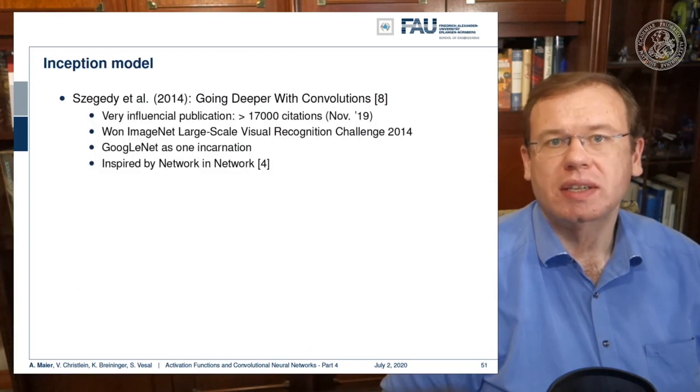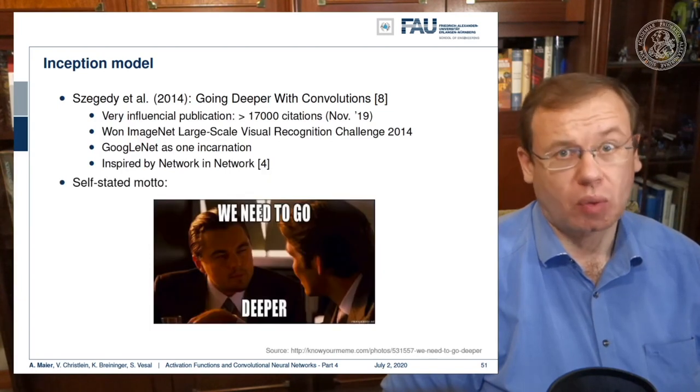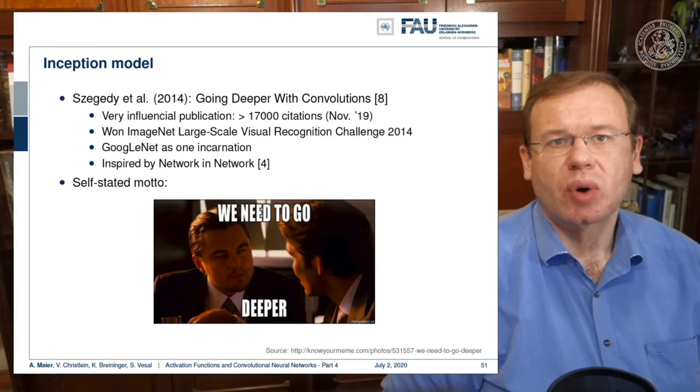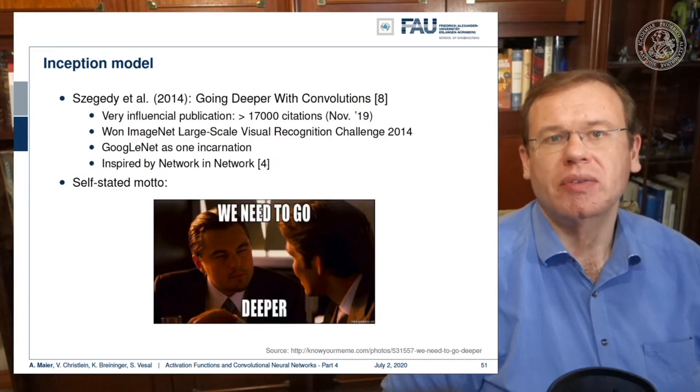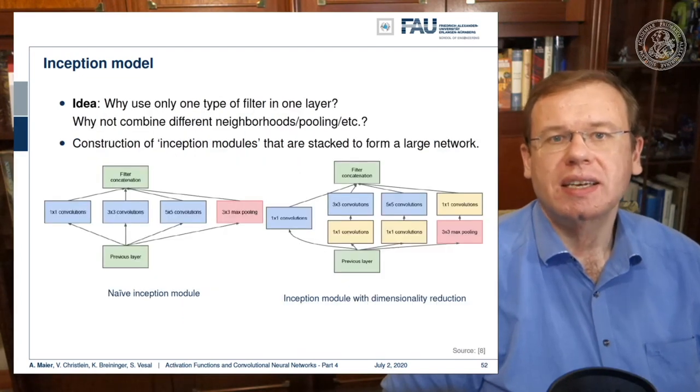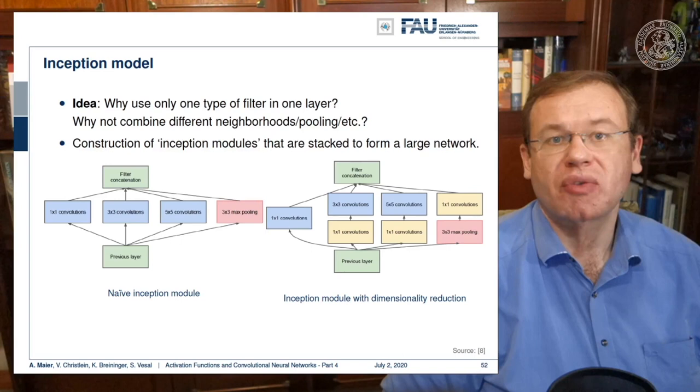An interesting concept that we will also have a look at in more detail later in this lecture is the inception model. This approach is from the paper going deeper with convolutions reference 8. Following our self-stated motto we need to go deeper. This network won the ImageNet challenge 2014. An example is GoogleNet as one incarnation which is inspired by reference number 4. The idea that they presented tackles the problem of having to fix the steps of convolution and pooling in alteration. Why not allow the network to learn on its own when it wants to pool and when it wants to convolve.